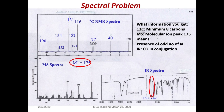If you look at this problem, you are given three spectra. The top one is the 13C NMR spectrum, the bottom left is the mass spectrum, and the bottom right is the IR spectrum of the compound. If you look at the 13C NMR spectrum and count the peaks, there are 8 carbon signals.